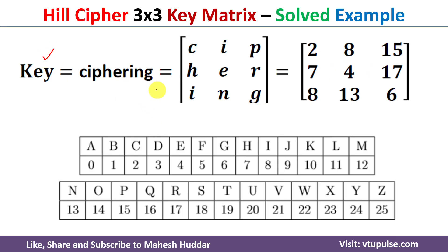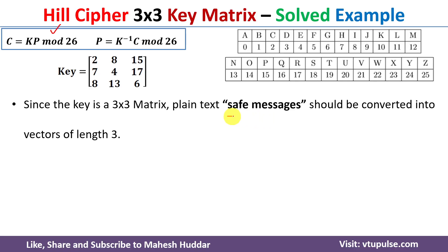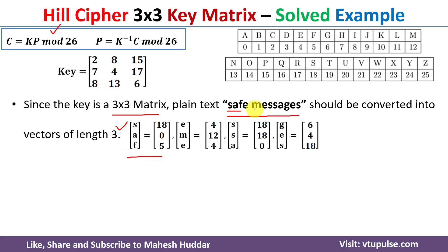Now we encrypt the plain text 'safe messages' into a ciphertext. The plain text must be divided into vectors of length 3, because the key matrix is 3×3. So 'SAF' comes in the first vector, 'EME' in the second, and so on. Each letter is converted to a numeric value using the table: S=18, A=0, F=5, and so on. Then each vector of length 3 is converted to ciphertext using the formula C = K·P mod 26.